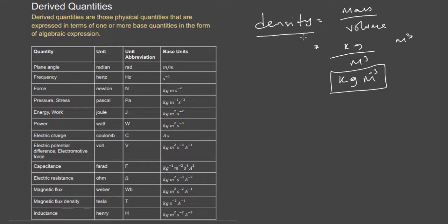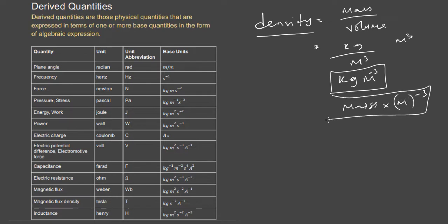Density is a derived quantity because you can express it in terms of base quantities — mass (a base quantity) and length (also a base quantity), raised to the power of minus 3. That is what a derived quantity is all about.